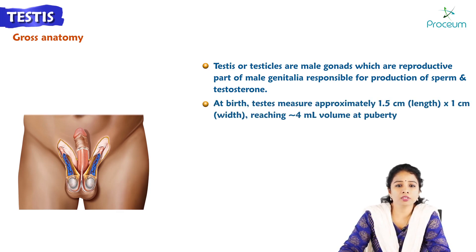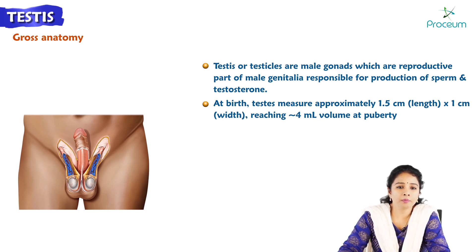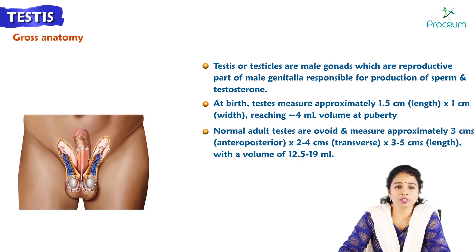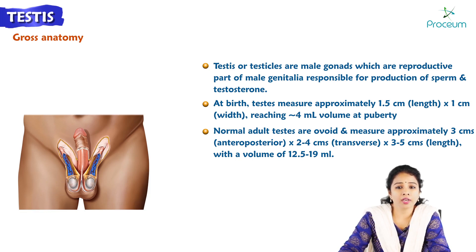At birth, testis measures approximately 1.5 centimeters in length and 1 centimeter in width, reaching around 4 ml volume at puberty. In normal adults, the testis are ovoid and measure approximately 3 centimeters in anteroposterior thickness, 2 to 4 centimeters in transverse diameter, and 3 to 5 centimeters in length, with a volume of 12.5 to 19 ml.